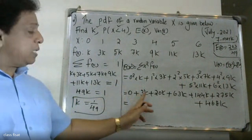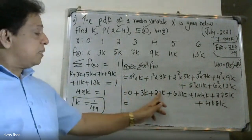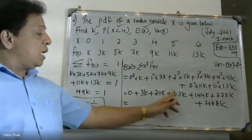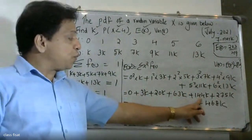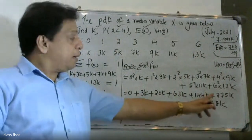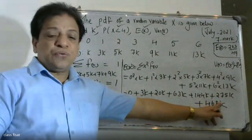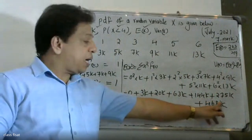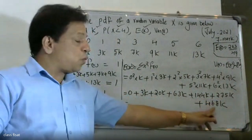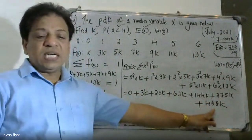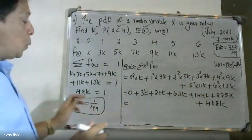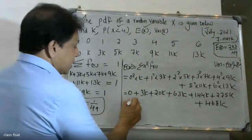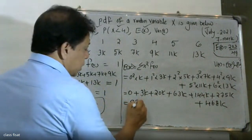Expanding E(x squared): 0 plus 3k plus 20k plus 63k plus 144k plus 275k plus 468k, giving the total sum, divided by 49.